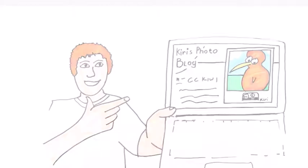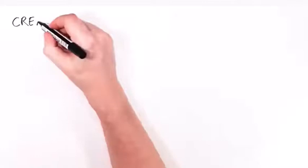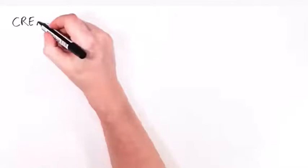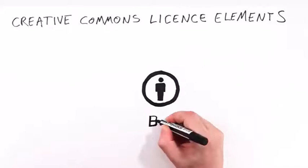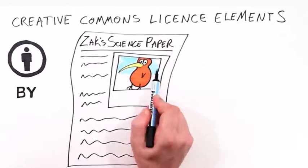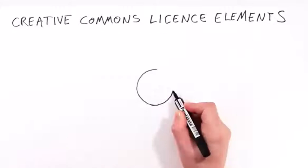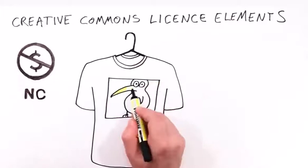There are more rules Kiri could have included. Creative Commons licenses are made up of license elements — you can think of them as rules, and each has its own special symbol. This is Attribution: it means that Zach must acknowledge Kiri when he publishes his science project containing her photo. This is Non-Commercial: it means no one else but Kiri is permitted to make money from CC Kiwi.